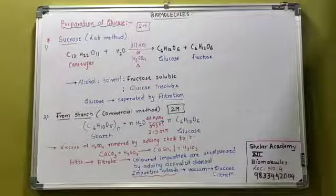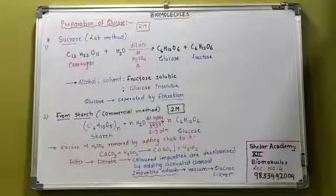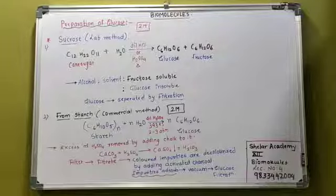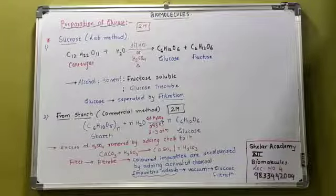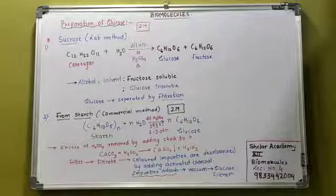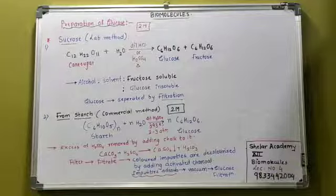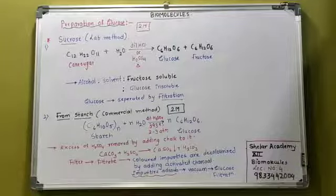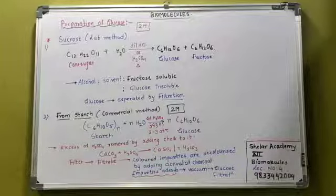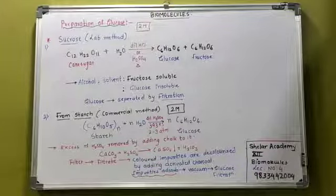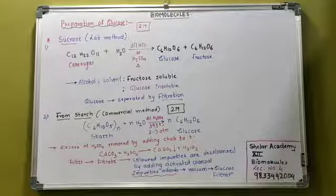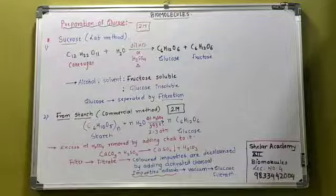Now when I remove the precipitate, what will remain is the filtrate. What is the filtrate? You will decolorize it. How do you decolorize the filtrate? Colored impurities present in the filtrate are decolorized by adding activated charcoal. When I add activated charcoal, the colored impurities will be removed. Impurities adsorb ho jayenge charcoal pe and they will be removed.